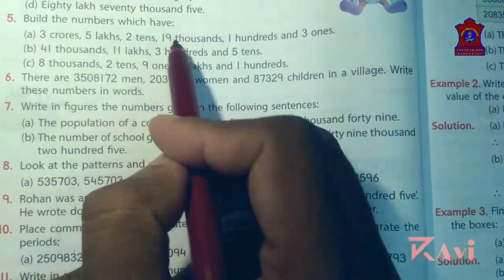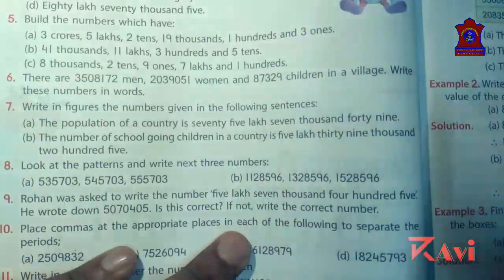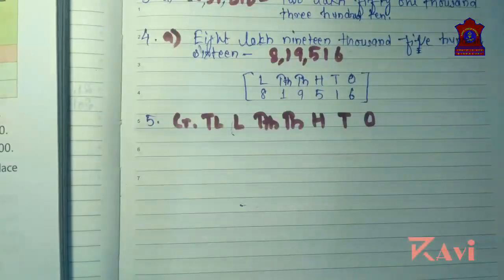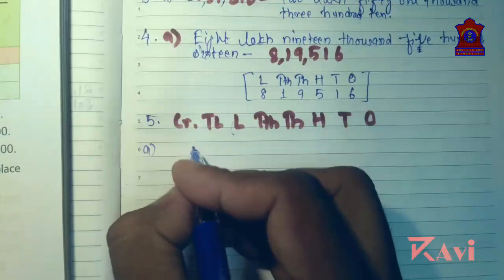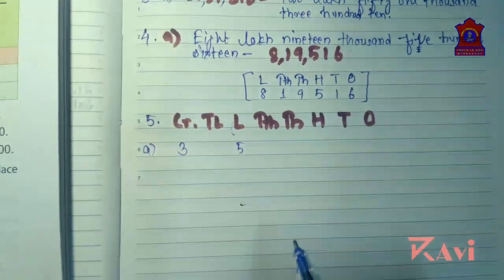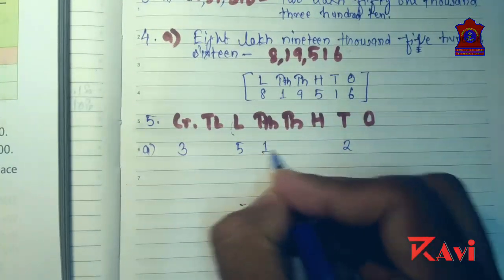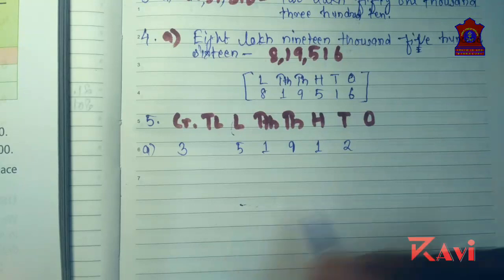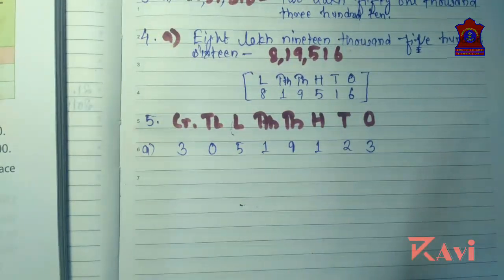The question is: three crore, five lakh, two tens, nineteen thousands, one hundred, and three ones — written in jumbled form, we need to unjumble. Three crore means three at crore's place, five lakh means five at lakhs place, two tens means two at tens place, nineteen thousand means nineteen at thousands place, one hundred at hundreds place, three ones at ones place. Ten lakh is missing so put zero there.